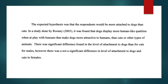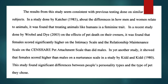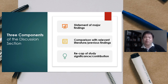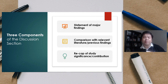Once you have done that, you do the comparison. This is one example where you compare with previous studies — you mention first what you have found out and then you compare with what other people have found out. After you have done the comparison, you do a recap of the significance. You can take some significance from what you reported earlier, but highlight the important part based on your findings.